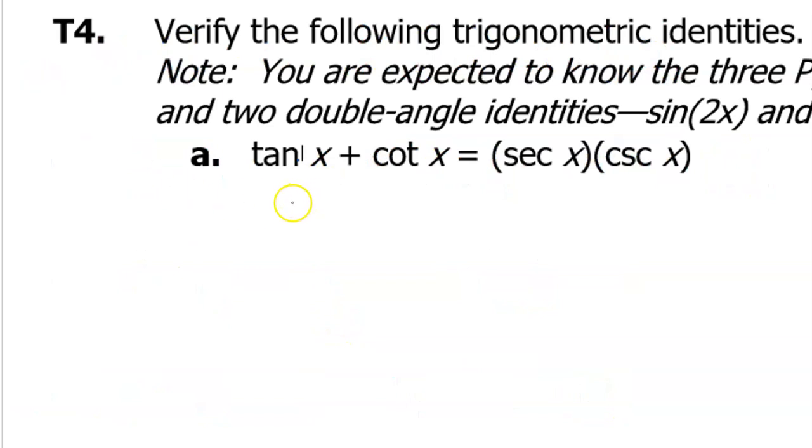In order to verify a trig identity you have to pick one side of the equation to work on and manipulate until it looks like the other side. You cannot work both sides of the equation. I usually pick the side that looks more complex, and certainly if one side has addition or subtraction that's the side I pick. So I'm going to work on the left side until it looks like the right side.